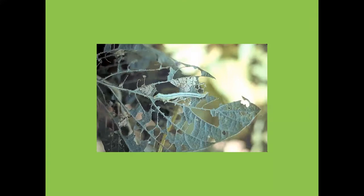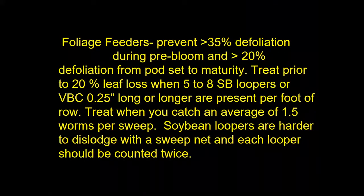The soybean looper is the most difficult to control caterpillar in soybeans. It starts usually in the lower part of the plant and the larvae move up. It will stick to your pant legs when you walk out in the field and you'll bring them out with you. Our foliage feeders have a defoliation threshold of 35% prior to bloom, and a 20% defoliation threshold from pod set to maturity. You need to treat prior to 20% leaf loss when you have five to eight loopers or other caterpillars that are a quarter inch long or longer per foot of row, or when you catch an average of 1.5 worms per sweep. Since loopers are harder to dislodge, you count them twice per sweep across two rows.